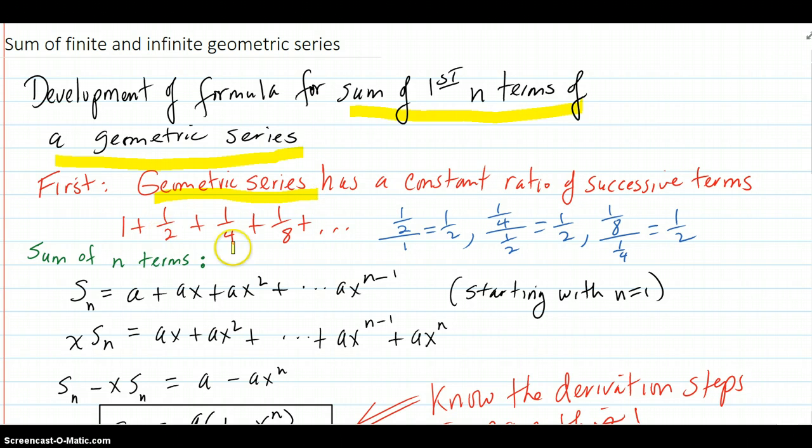It's a sum of numbers, and it has a constant ratio of successive terms. Here is such a sequence, right here.